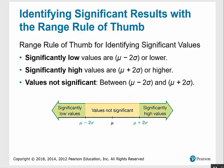Significant results are found by using the range rule of thumb. Significantly low values are the mean minus 2 times the standard deviation or lower. Significantly high values are the mean plus 2 times the standard deviation or higher. Values that are not considered significant are between those minimum and maximum boundary values.